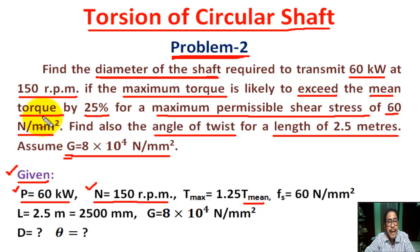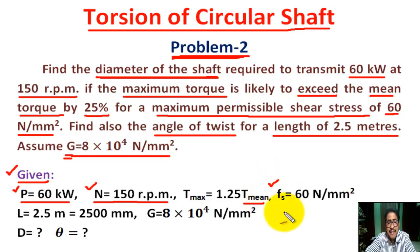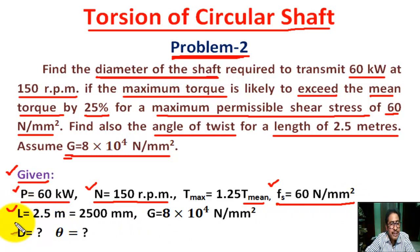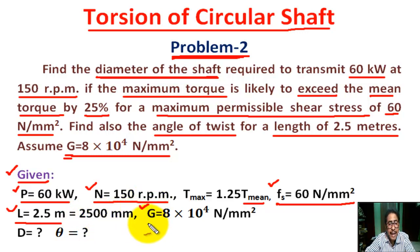T_max equals 1.25 T_mean, since maximum torque exceeds the mean torque by 25%. The shear stress fs induced in shaft material is given as 60 Newton per millimeter square. Length of the shaft L equals 2.5 meters, which we convert to 2500 millimeters. Modulus of rigidity G equals 8 into 10 to the power 4 Newton per millimeter square.